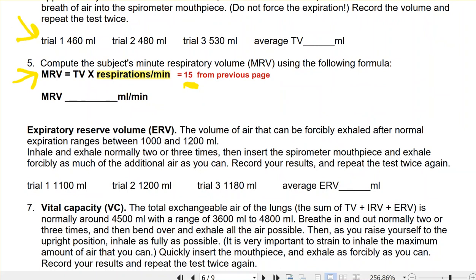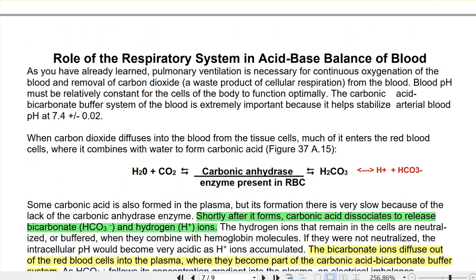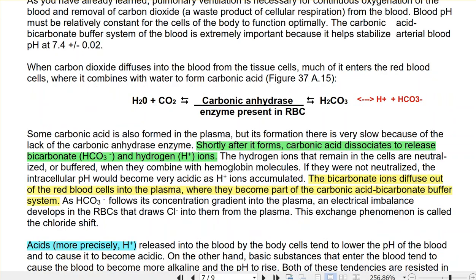Now let's talk about the acid-base balance of your blood. Your body stays at a very strict pH range — it never wavers. If you get to 7.5 you die; if you get to 7.3 you die. So we have to have a very good buffer system to counter the acids that build up from CO2 and respiration. Here is our first look at the carbonic acid-bicarbonate buffer system, and you can see a picture of this in your lab manual in Exercise 37 inside a big red blood cell.